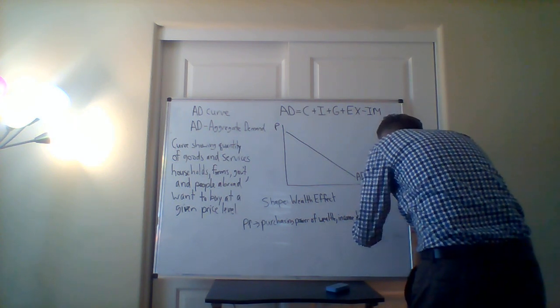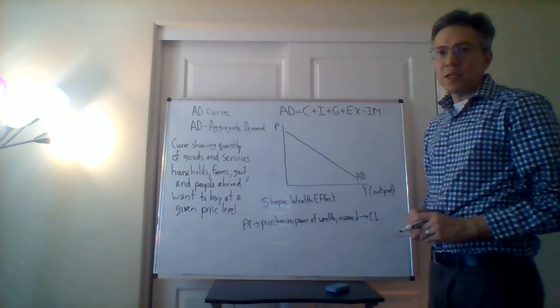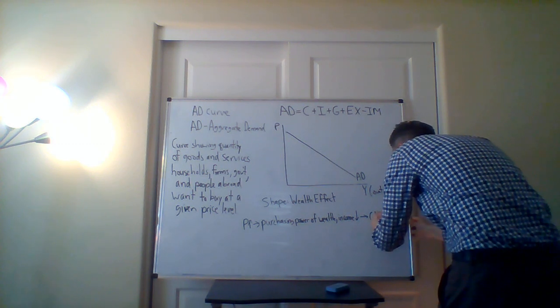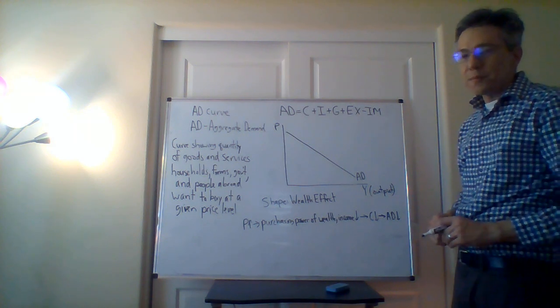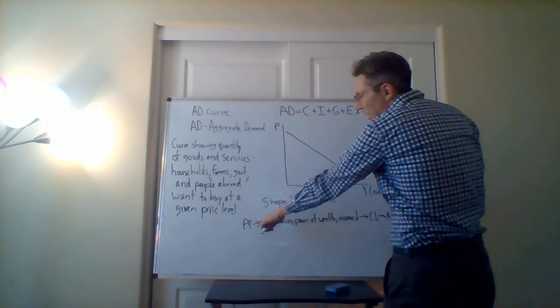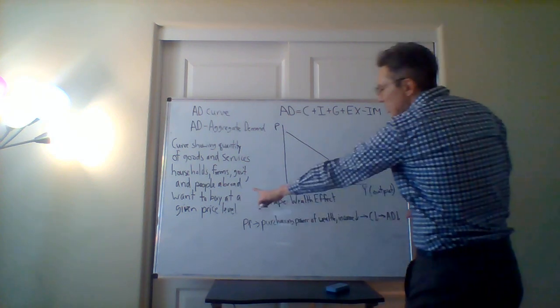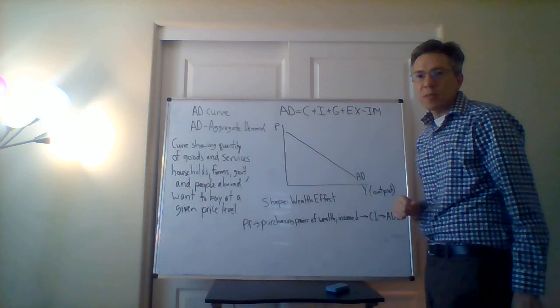If you have this lower purchasing power, consumption is then going to decrease. And so then what does that mean for aggregate demand? Well, since that's a component of aggregate demand, aggregate demand is going to fall. So what we see is this negative relationship between the price level and the aggregate demand. This goes up, this goes down, and hence we have this downward sloping line.